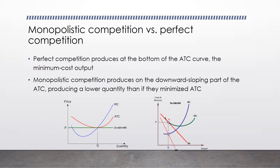Another difference is that while both produce where price equals average total cost in the long run, notice where on the ATC curve they're producing. A perfectly competitive firm produces at the bottom of the average total cost curve — the minimum cost output. However, monopolistically competitive firms produce on the downward sloping portion of the ATC curve, producing a lower quantity than if they minimized average total cost. They produce at the quantity where MR equals MC, but then charge the higher price on the demand curve.